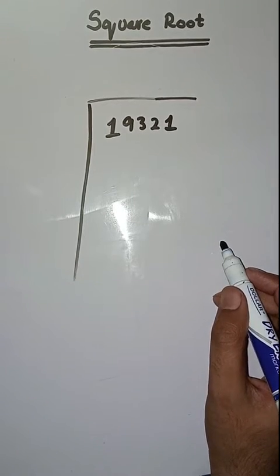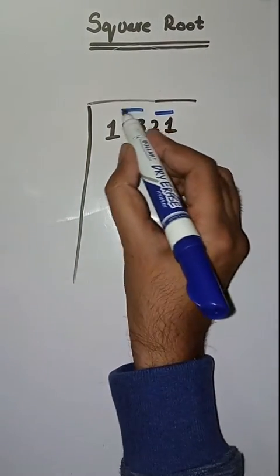So first step is we have to make pairs from right to left like this: 21, 93 and 1.